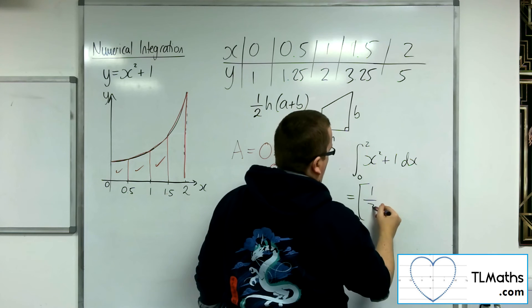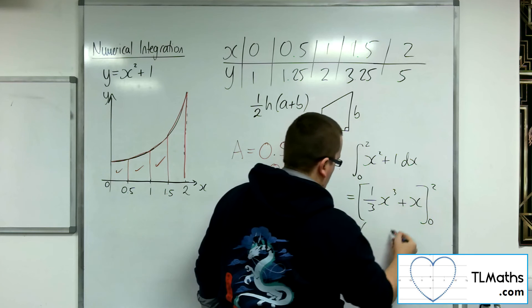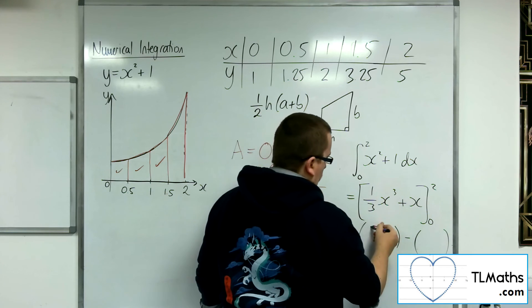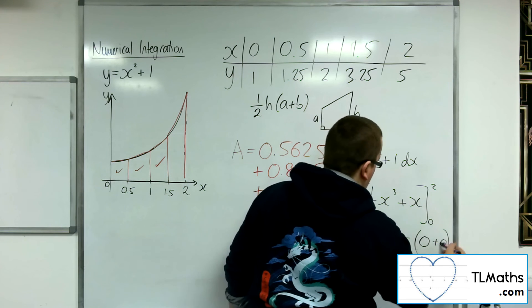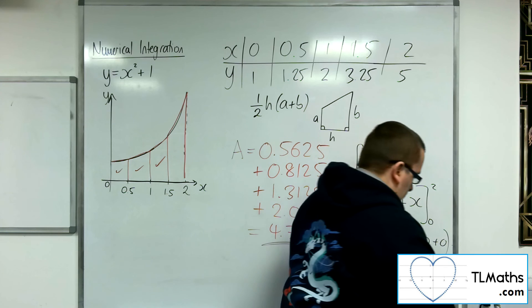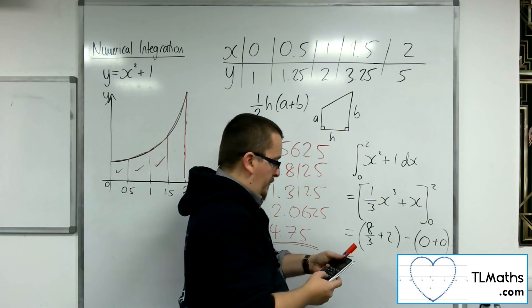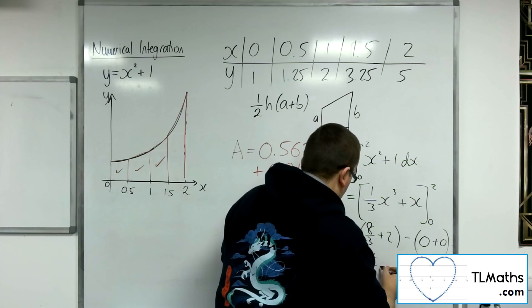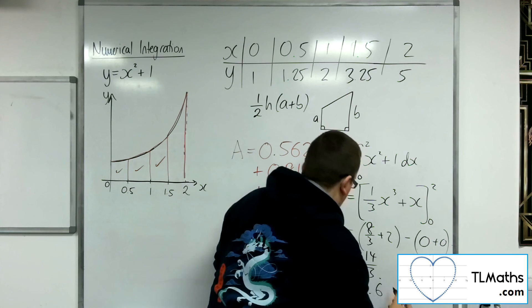So adding 1 to the power, divided by the new power. Substituting in 2, we're going to get 8 over 3, plus 2. Substituting in 0, we're going to get 0 plus 0. So we've got 8 thirds plus 2, so 14 thirds, which is 4.6 recurring.